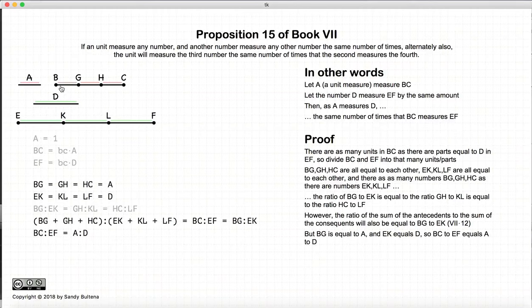But BG is equal to A and EK is equal to D. So substituting A and D, we have that BC to EF is equal to the ratio of A to D.